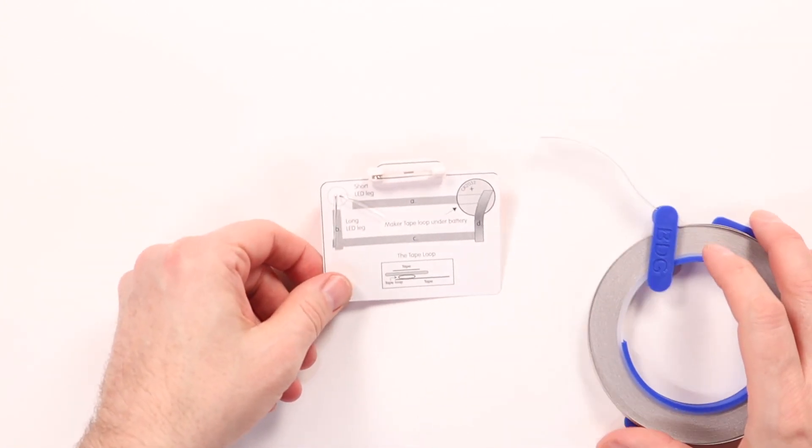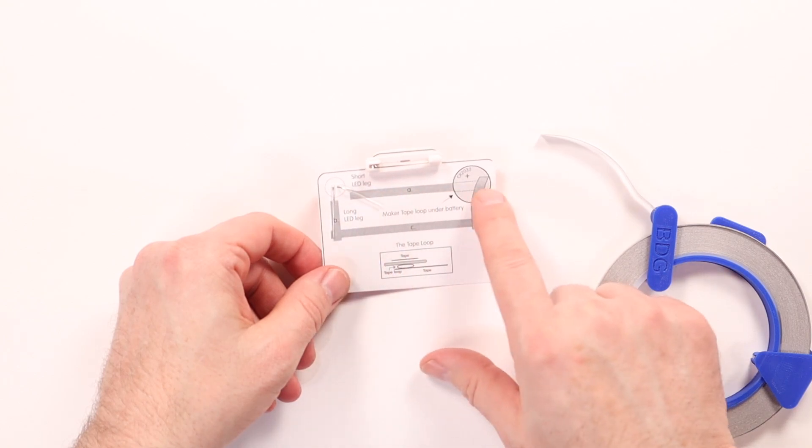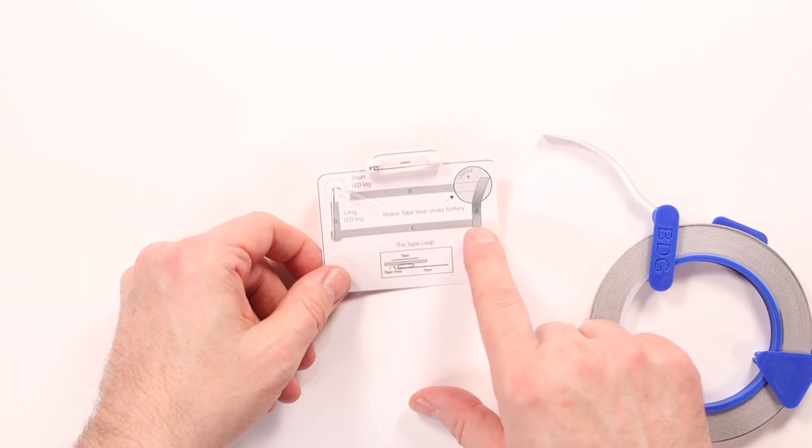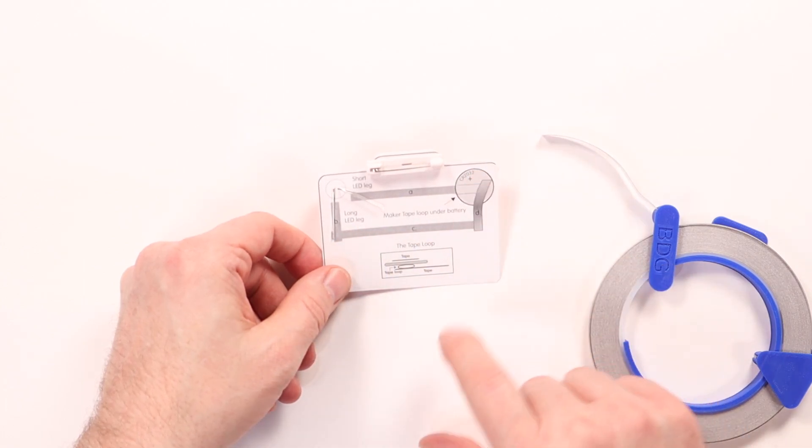Now we can start adding our maker tape. We're going to start with A, laying a strip down there, and then B, each of those will cover an LED leg, add strip C, the battery, and then D. We're also going to add a tape loop underneath the battery.